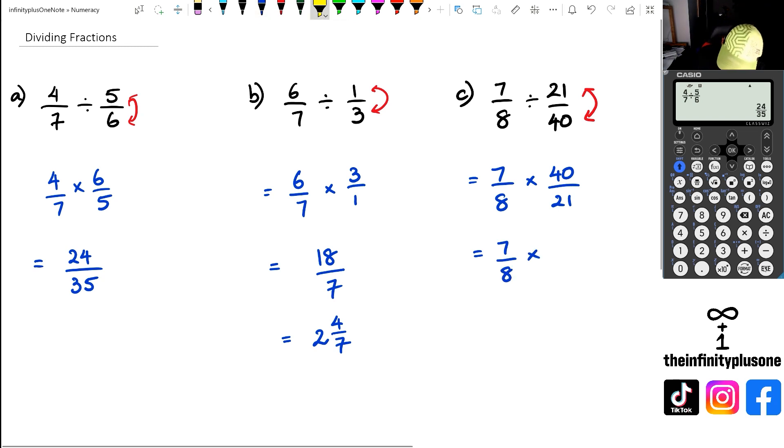So 40, there's a connection between seven and 21. And there's a connection between eight and 40. So what I'm going to do is I'm going to write 40 as eight times five. And 21 as seven times three.